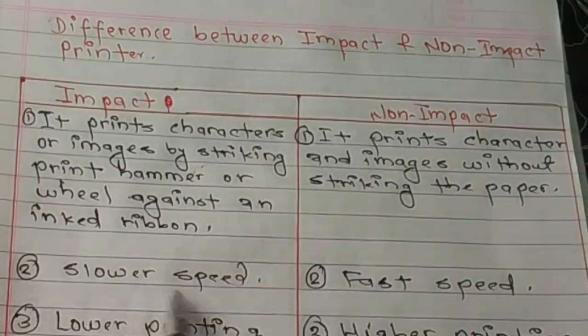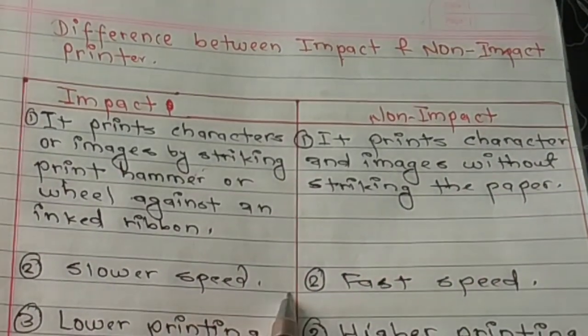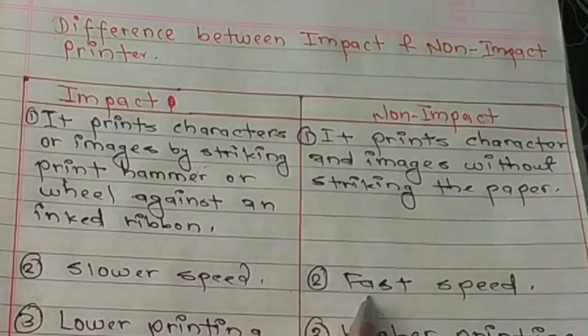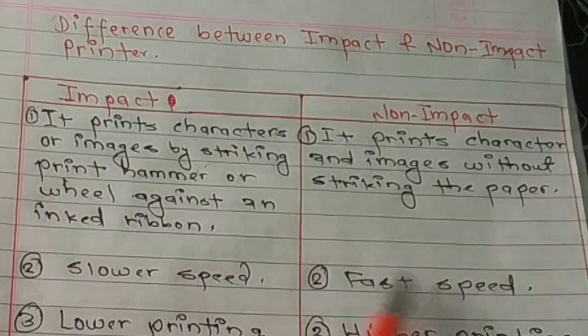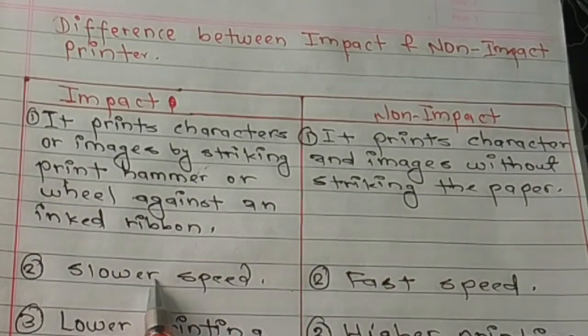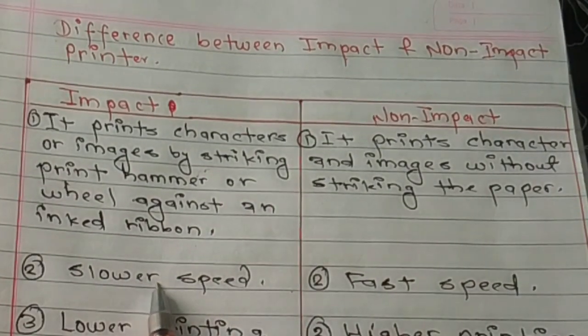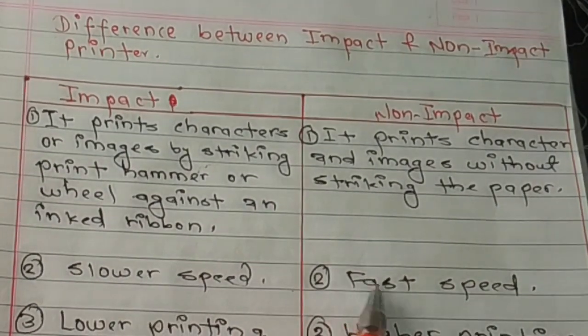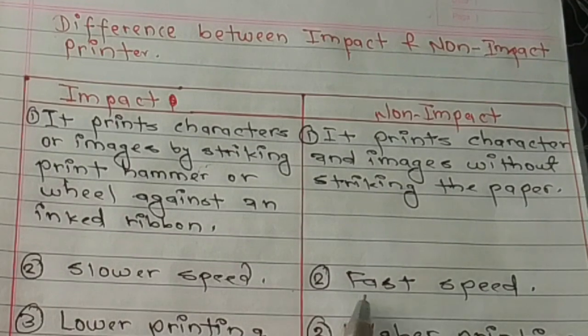Regarding speed: impact printers are slower in speed, while non-impact printers are faster in speed.